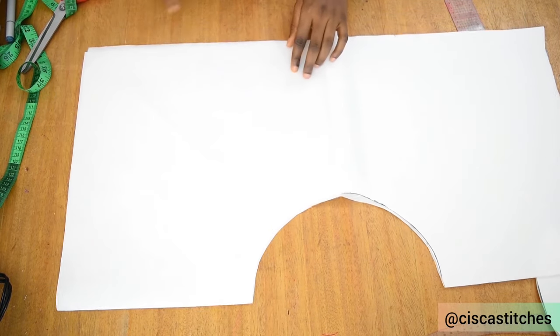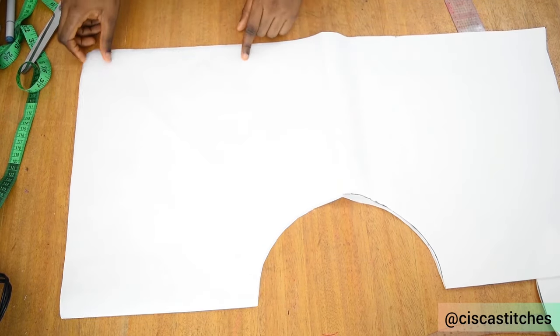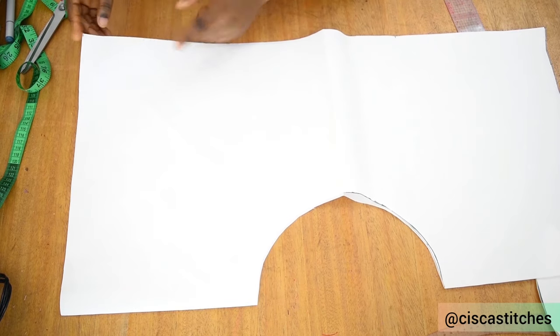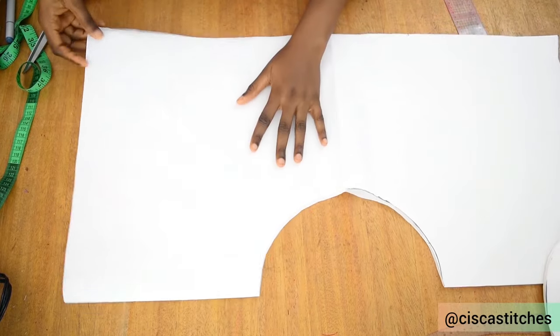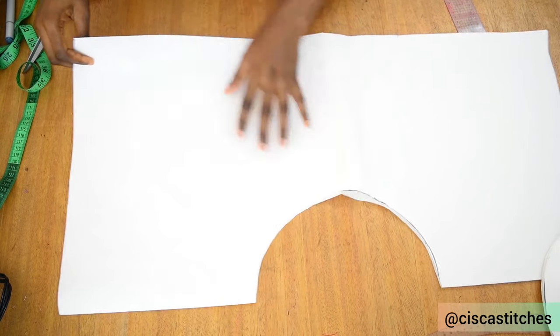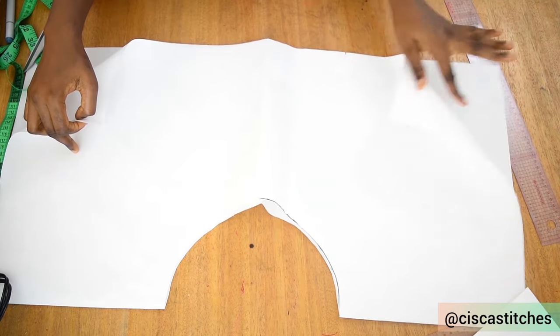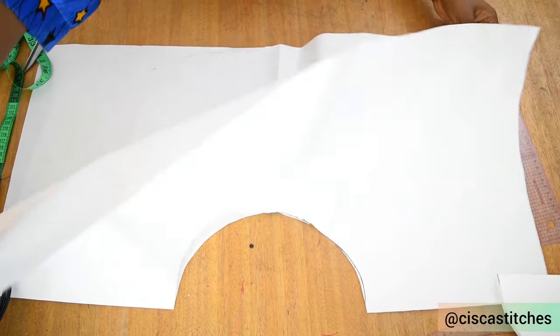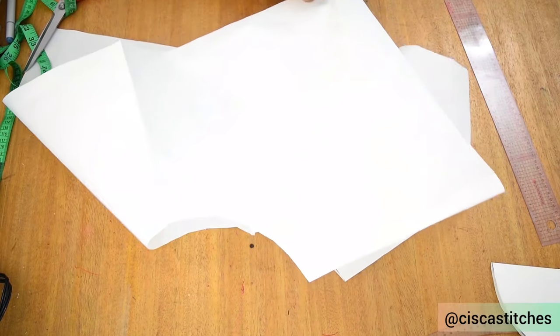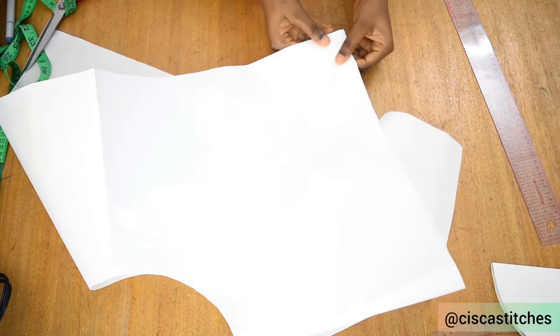What you need to do now is match the pointed edges across from each other. So I'm going to grab this one that is on top, come to this side and grab this one that is under, and then I'm going to place them on top of each other like this.